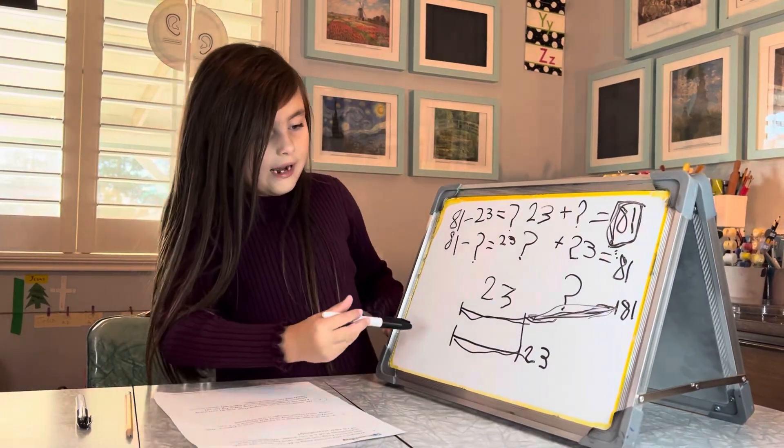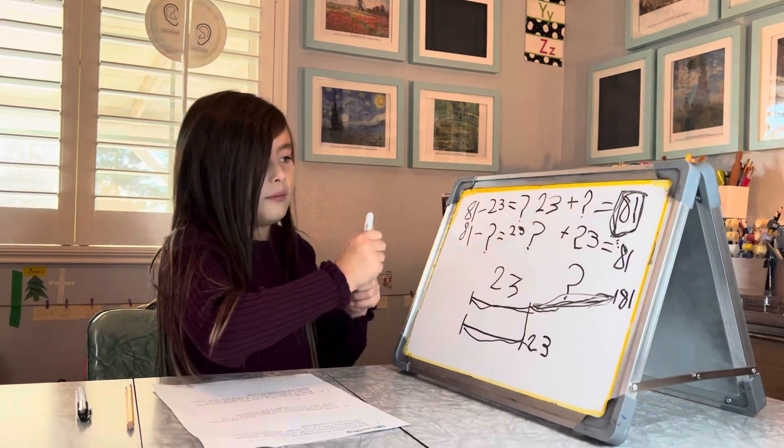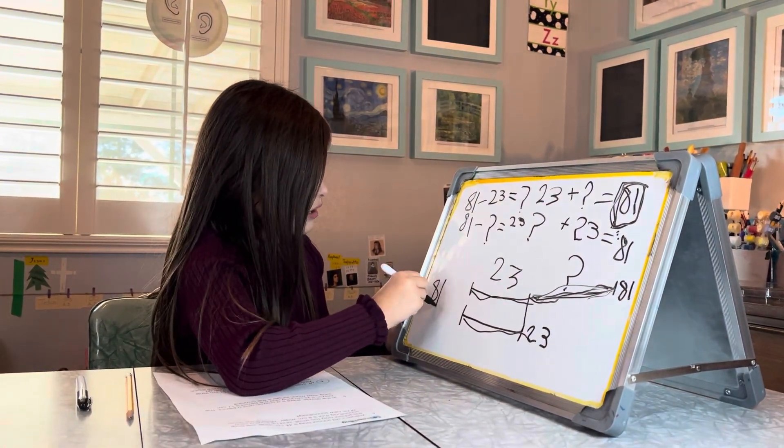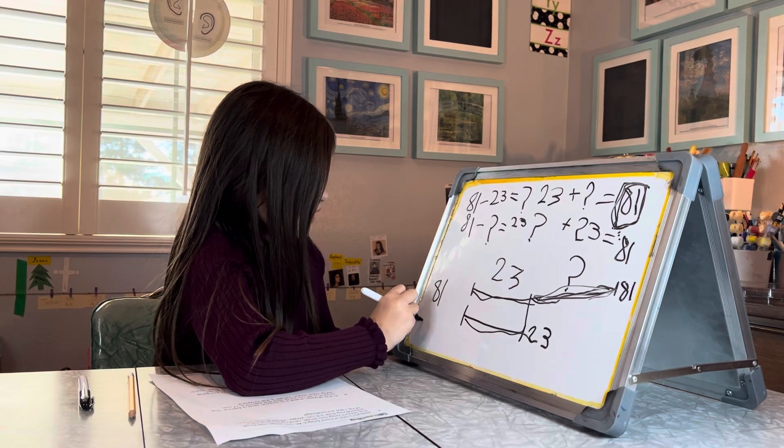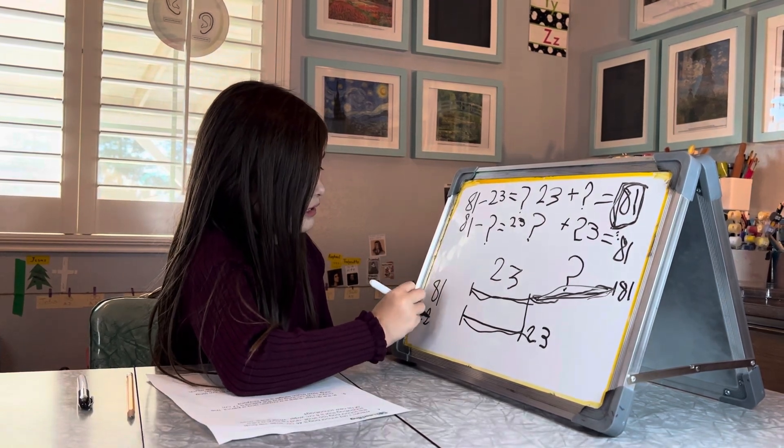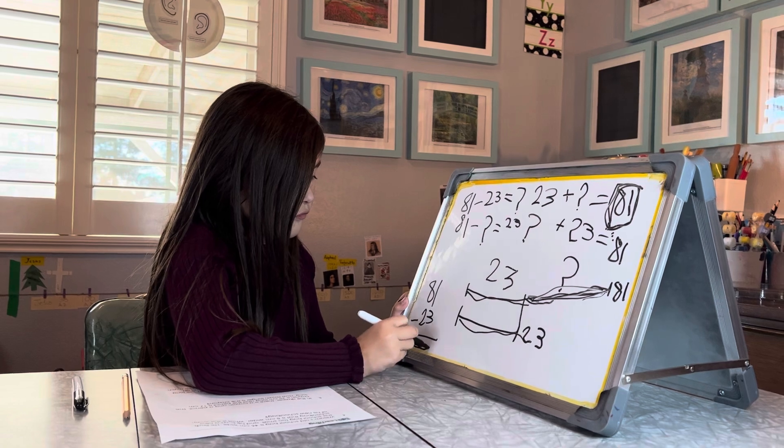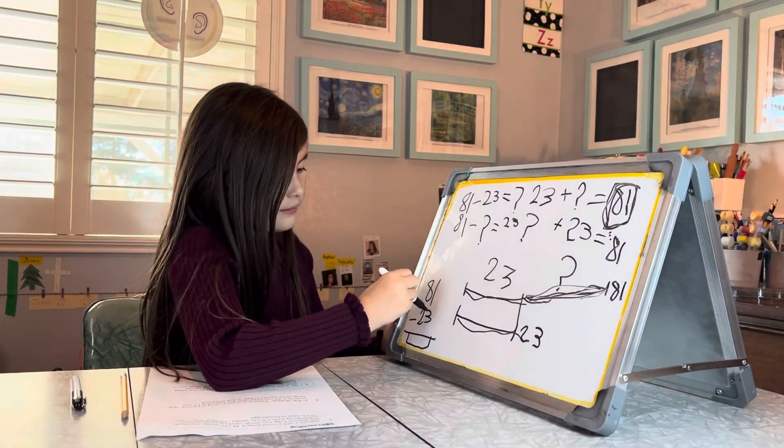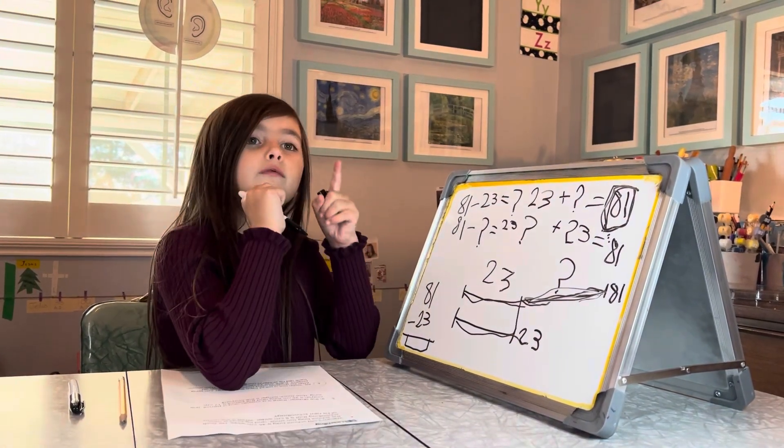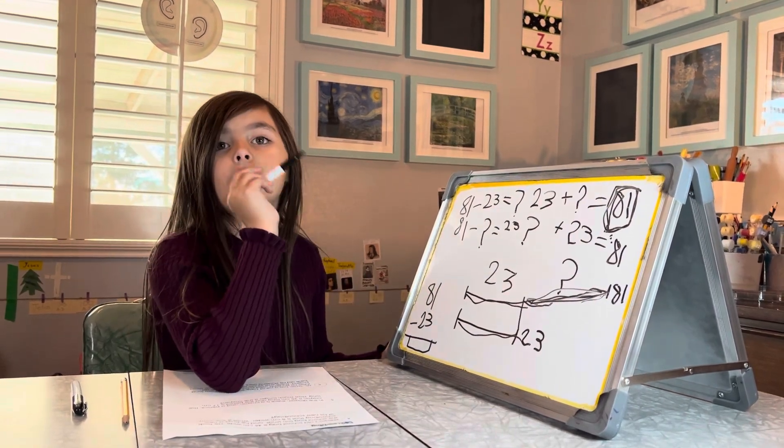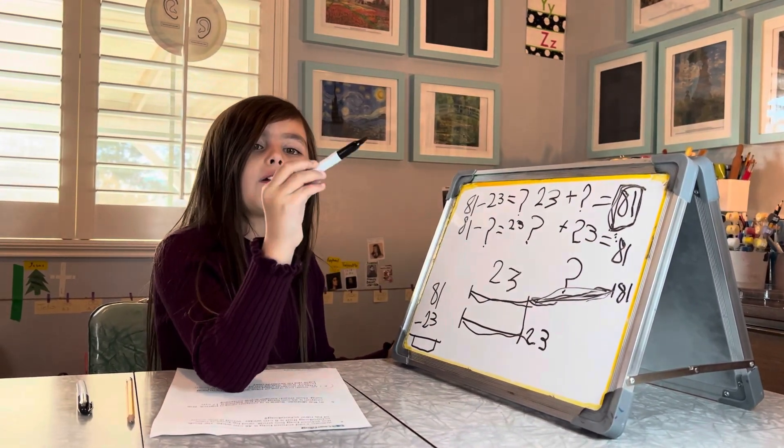So since we have a little room here, let's write the up and down problem. 81 takeaway 23 equals what? One, one takeaway three. Oh no, you don't have enough. So we're going to have to borrow a rod.